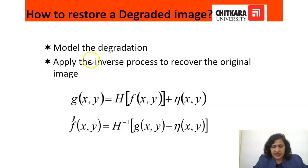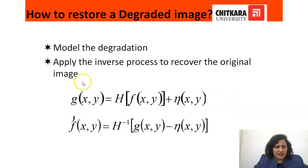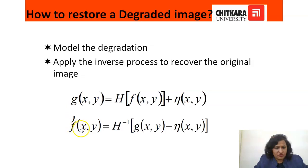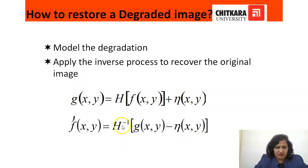Now how to restore a degraded image? To restore the degraded image we have to apply the inverse process. The approximation of F(x,y) is obtained by subtracting N(x,y) from G(x,y) — that is G(x,y) minus N(x,y) — and then applying the inverse process H inverse. So we will get the restored image.